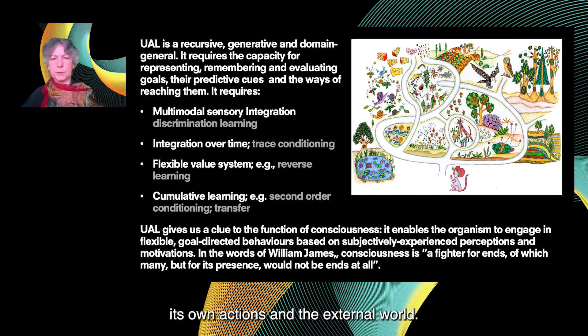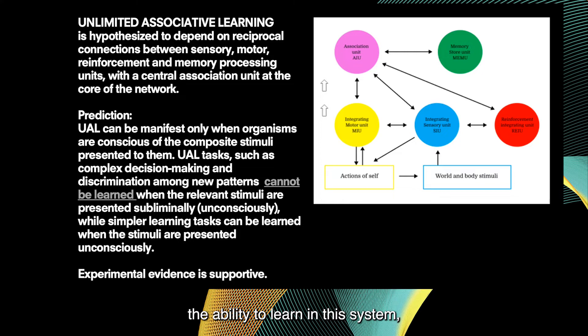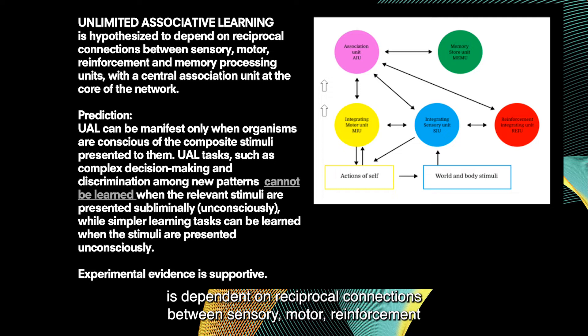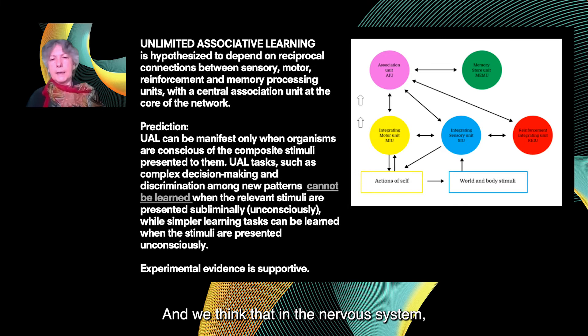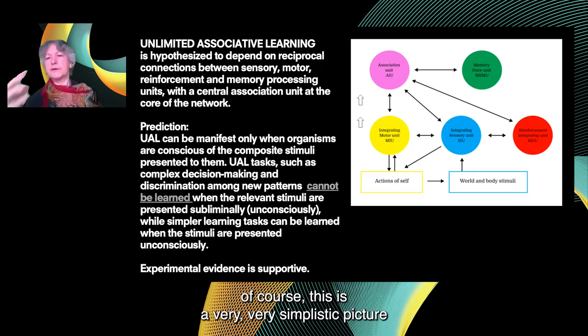We hypothesized that this kind of system — the ability to learn in this way — is dependent on reciprocal connections between sensory, motor, reinforcement, and memory processing units, with a central unit at the core of the network. You can see it here — this is the purple unit. We think that in the nervous system this kind of architecture, of course a very simplistic picture, is implemented in the central nervous system of animals.